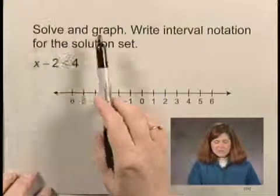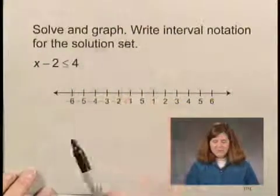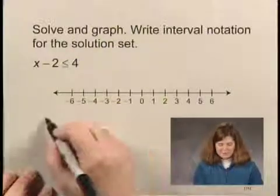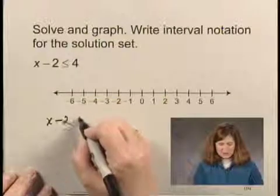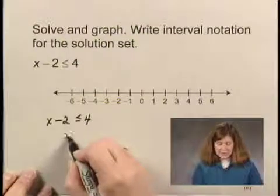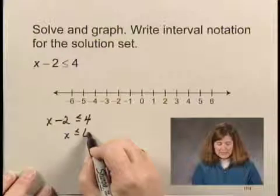We're asked to solve it, graph, and write interval notation for the solution set. First of all, let's solve. We have x minus 2 is less than or equal to 4. We add 2 on both sides, and we get x is less than or equal to 6.